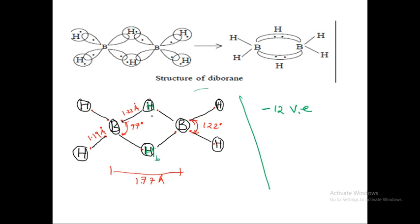In short form they are written as H_b (bridging hydrogen). You have two bridging hydrogens and four terminal hydrogens — one, two, three, four — four terminal hydrogens.